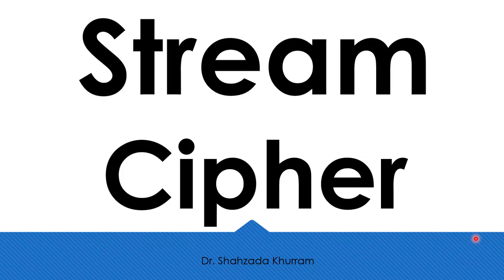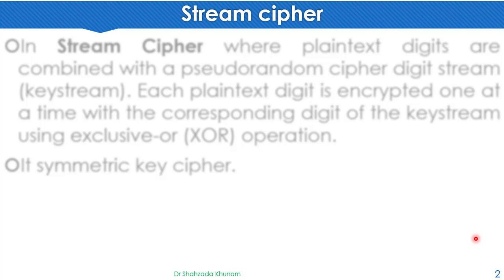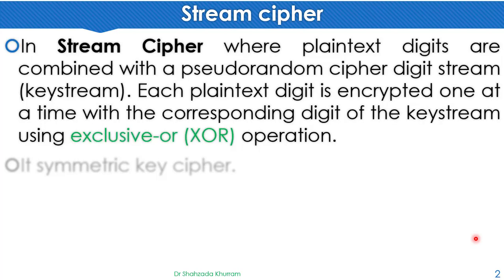Bismillahirrahmanirrahim. Hi everyone, today's topic is stream cipher. In this video we will learn how stream cipher works. In a stream cipher, plain text digits are combined with a pseudo-random cipher digit stream called a keystream. Each plain text digit is encrypted one at a time with the corresponding digit of the keystream using an exclusive OR operation.